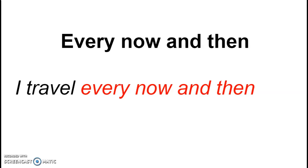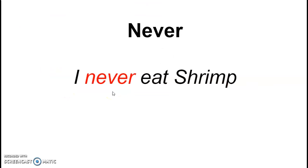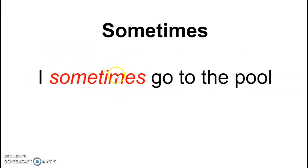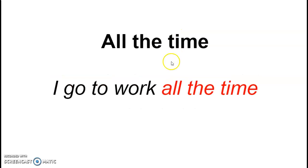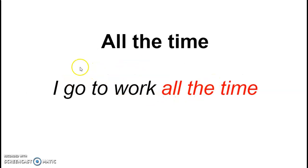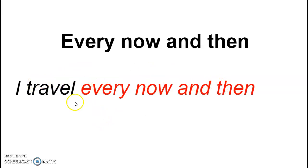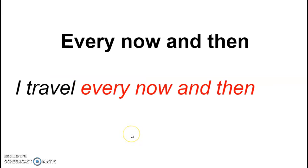Something important: words that are one single word, like 'sometimes,' 'often,' or 'never,' go after the subject — like 'I sometimes,' 'I often,' 'I never.' Expressions that have two or more words, like 'all the time' or 'every now and then,' go at the end — not 'I all the time go for a walk,' but 'I go for a walk all the time' and 'I travel every now and then.' Single words go after the subject; two or three word expressions go at the end, after the verb.